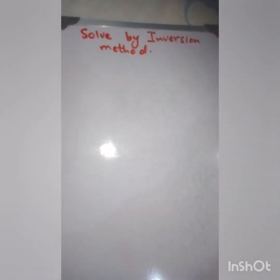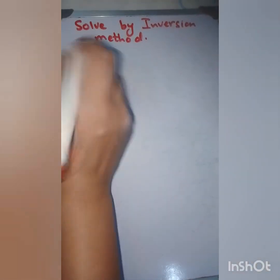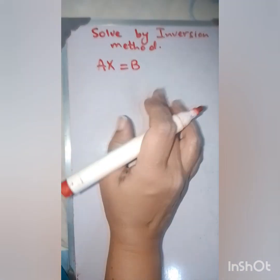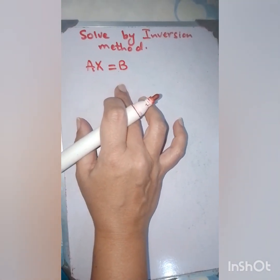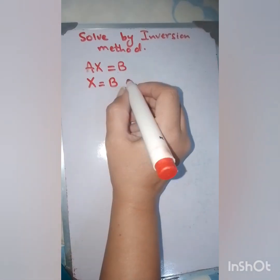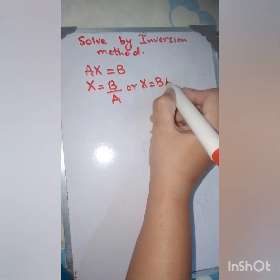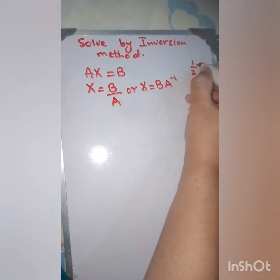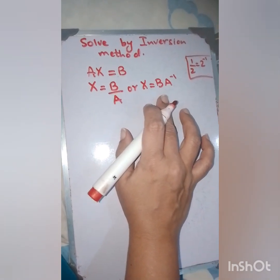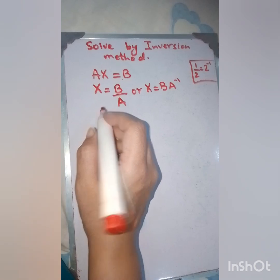Assalamu alaikum, today we are going to discuss the inversion method and Cramer's rule to solve a system of linear equations. We start with the formula A times X equals B. To find X, since A is multiplied on one side, it will divide on the other, so we can write X equals B upon A, or X equals A inverse times B, just as 1 upon 2 can be written as 2 inverse.